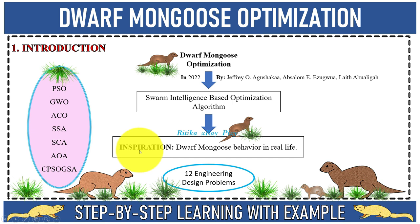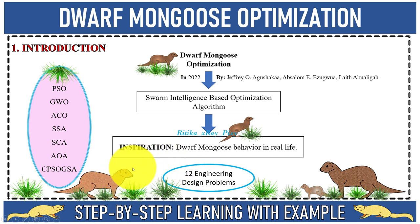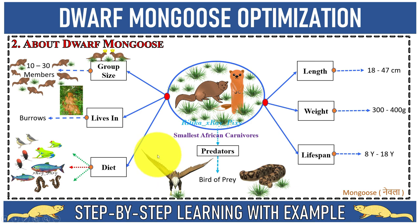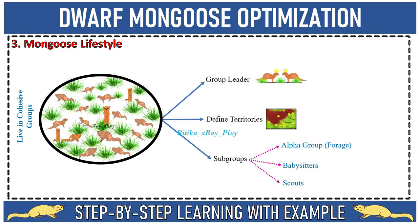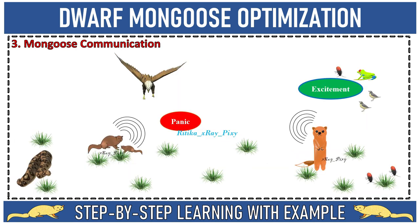This algorithm is basically inspired by Dwarf Mongoose behavior in real life. It mimics mongoose behavior, their lifestyle, foraging strategies, and more. So first we will try to understand about mongoose, their behavior and lifestyle, so that we can easily understand how this algorithm is working.